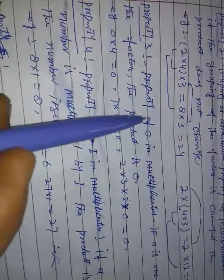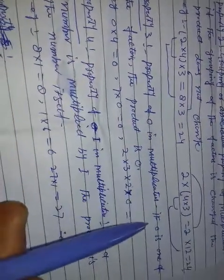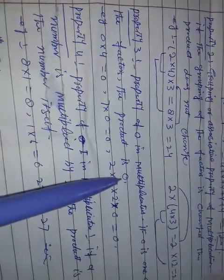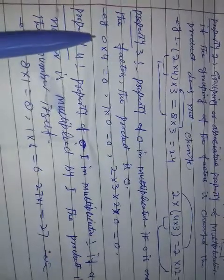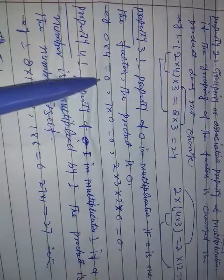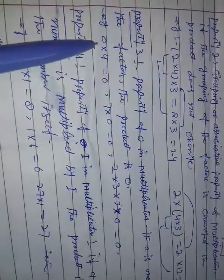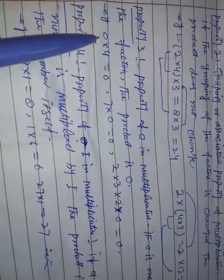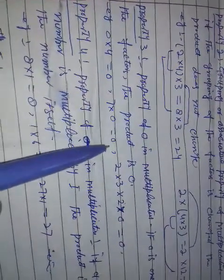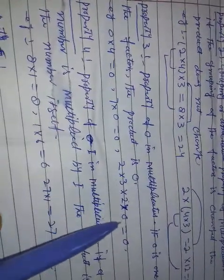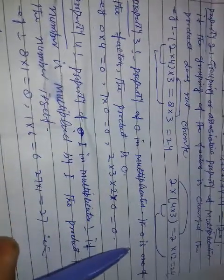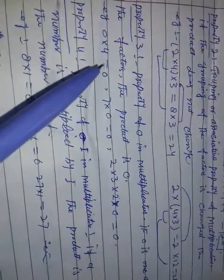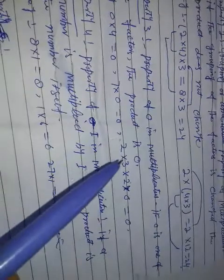Property third, property of zero in multiplication. If zero is one of the factors, the product is zero. For example, if zero is one of the factors, the product is zero.